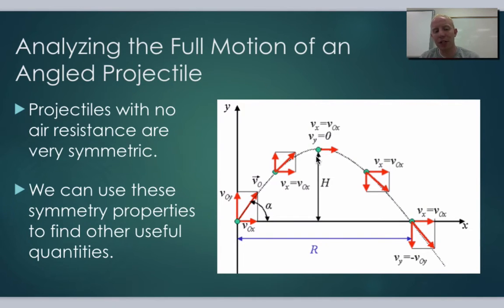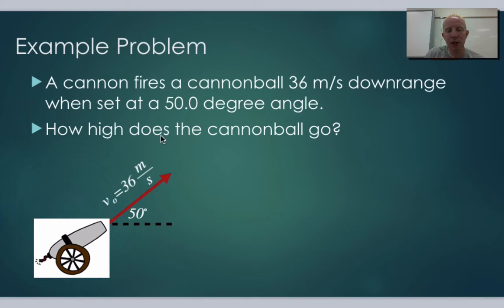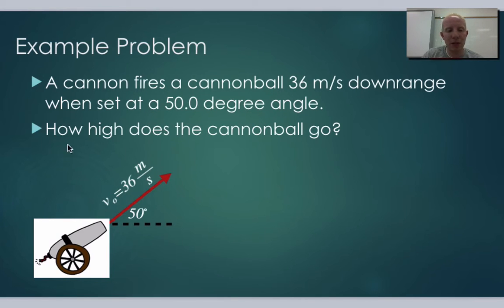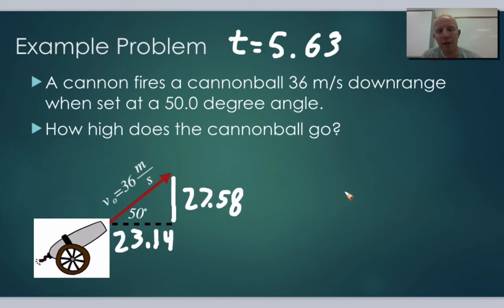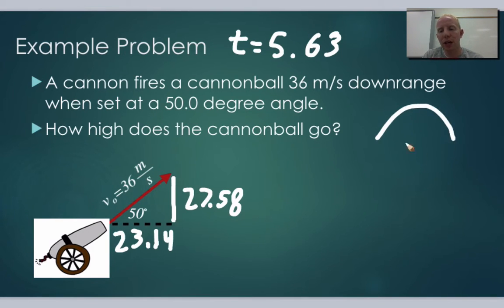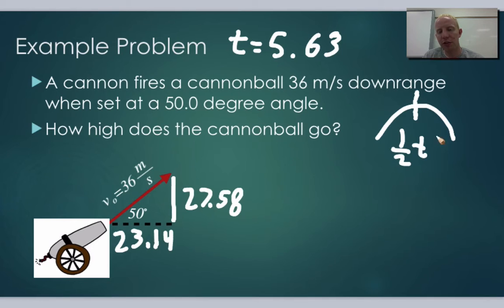Same situation — a cannon fires a cannonball at 36 meters per second — but now the question is: how high does the cannonball go? We can use the symmetry argument: the highest point occurs at half the total flight time, so t_half equals 5.63 divided by 2.